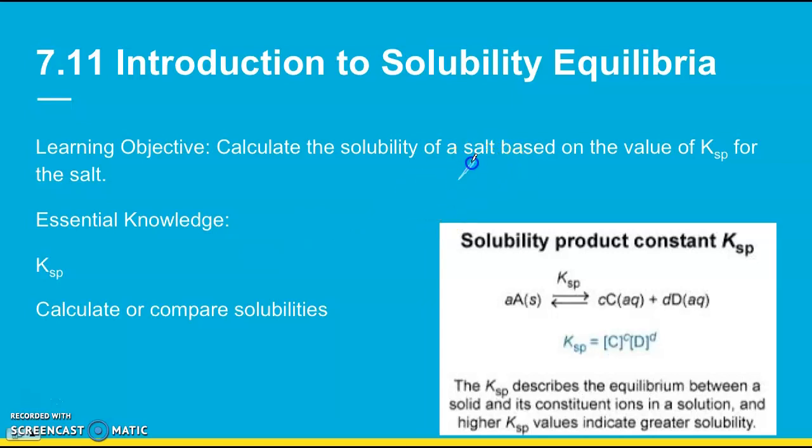So first of all, a salt is going to be an ionic compound, so a positive and negative ion. And when they dissolve in water, they separate into ions. So a basic reaction like this, you would start off with an ionic solid, and it ends up breaking apart into the ions. And here it doesn't show the charge of the ions in this example right here, but this would be a positive ion, this would be a negative ion.